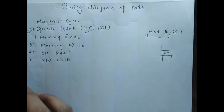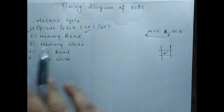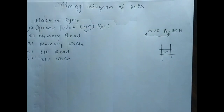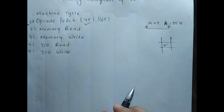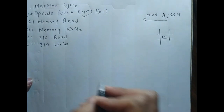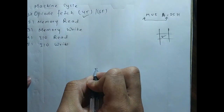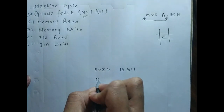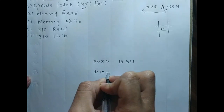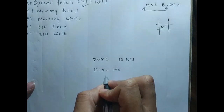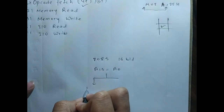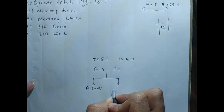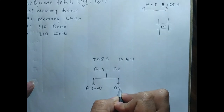So we'll learn how to draw the timing diagram for opcode fetch. Before going into the timing diagram, let's learn about the address bus of 8085. 8085 consists of a 16-bit address bus, from A15 to A0. It is divided into A15 to A8 and A7 to A0.